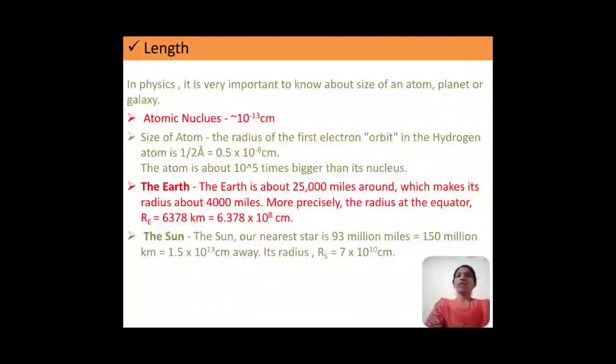So we will check one by one. First, we will start with length. In physics, we have to deal with different kinds of atoms, planets, as well as we should know the size of a galaxy. So first we will start with the smallest, that is the atomic nucleus, and it is nearly equal to 10 raised to minus 13 centimeter. The Bohr's first orbit, that is Bohr's, or we can say the hydrogen atom, the radius of the first orbit is given by 0.5 into 10 raised to minus 8 centimeter.